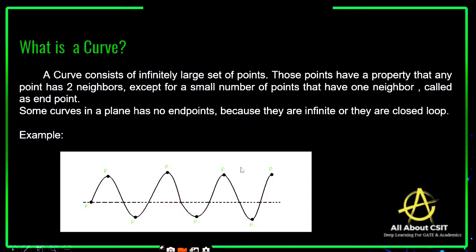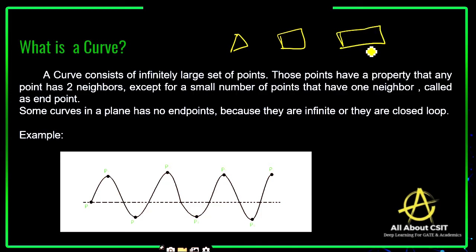So far we had discussed about lines — drawing line segments on the 3D and 2D plane. Different objects can be drawn using line segments. If you want to draw a triangle, square, rectangle, or diamond, you require line segments. But when you want to draw a circle, a curve is required.